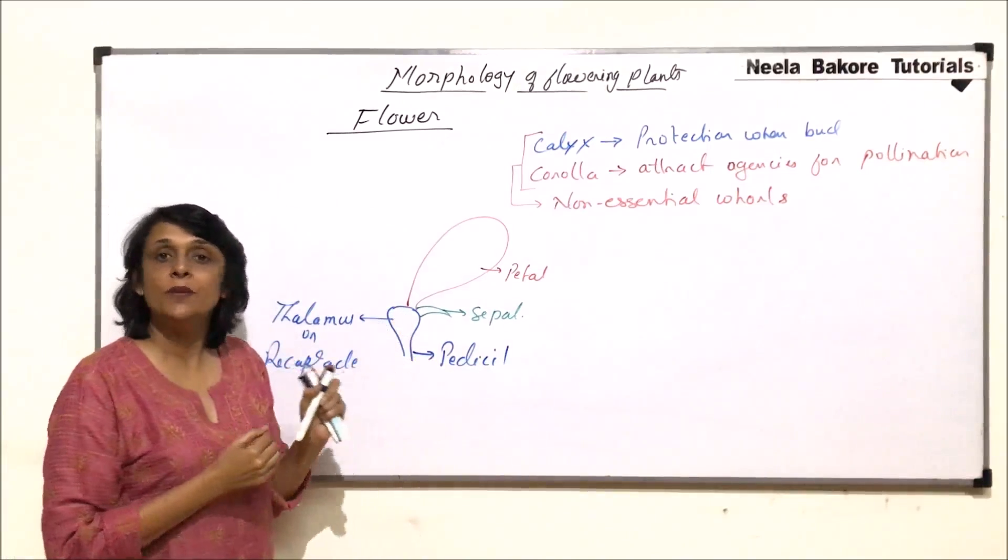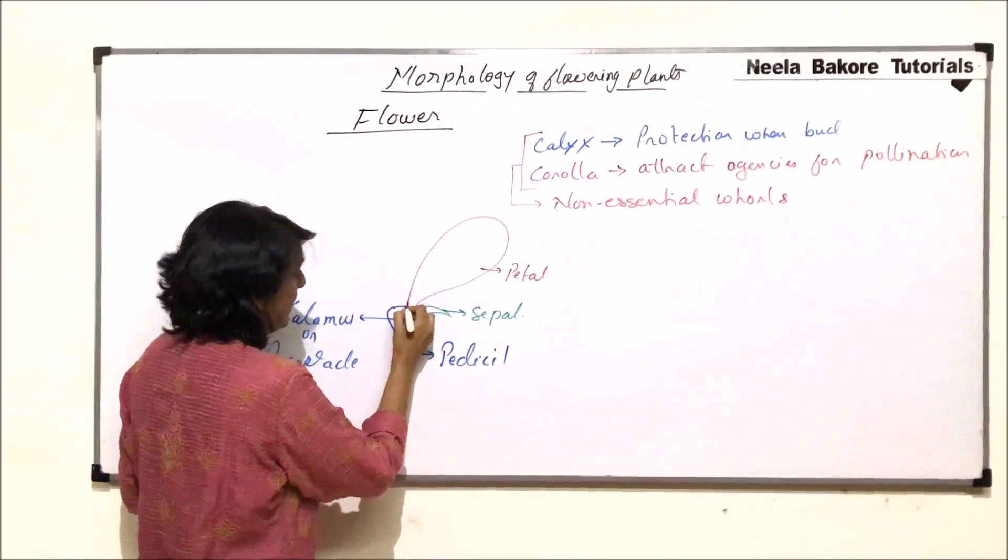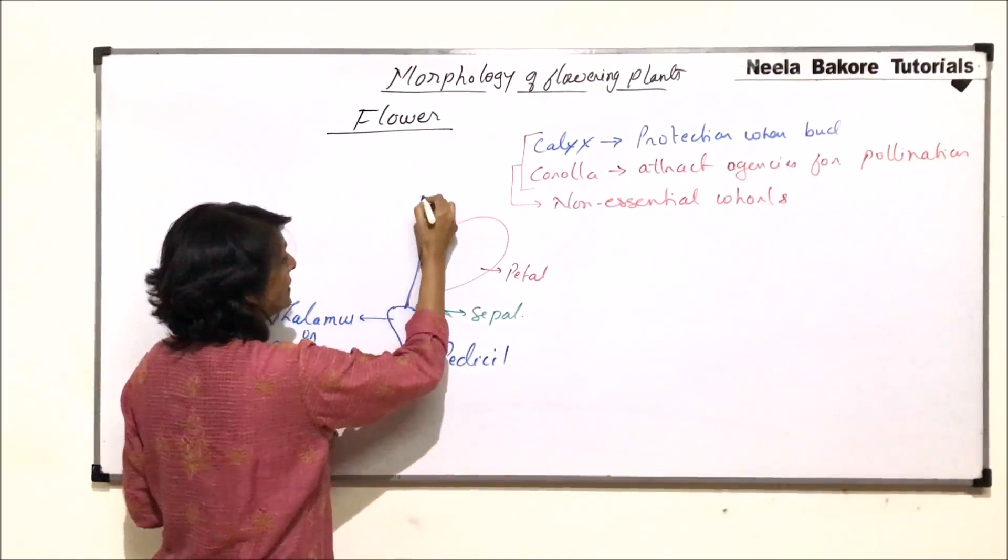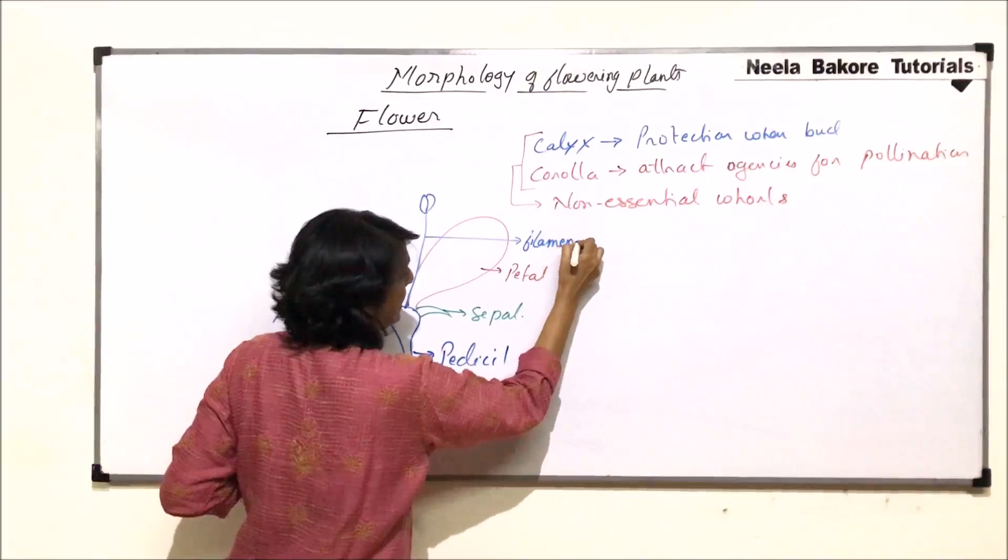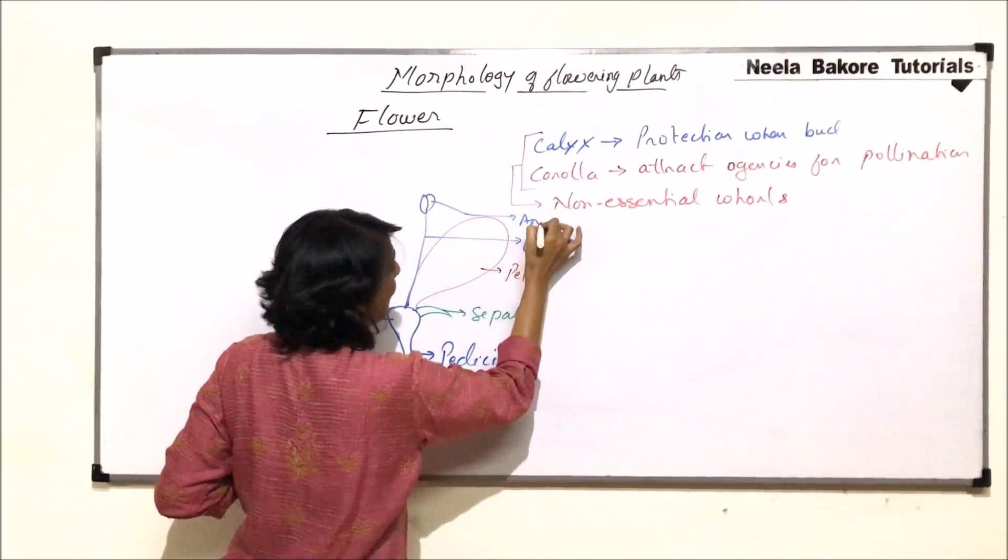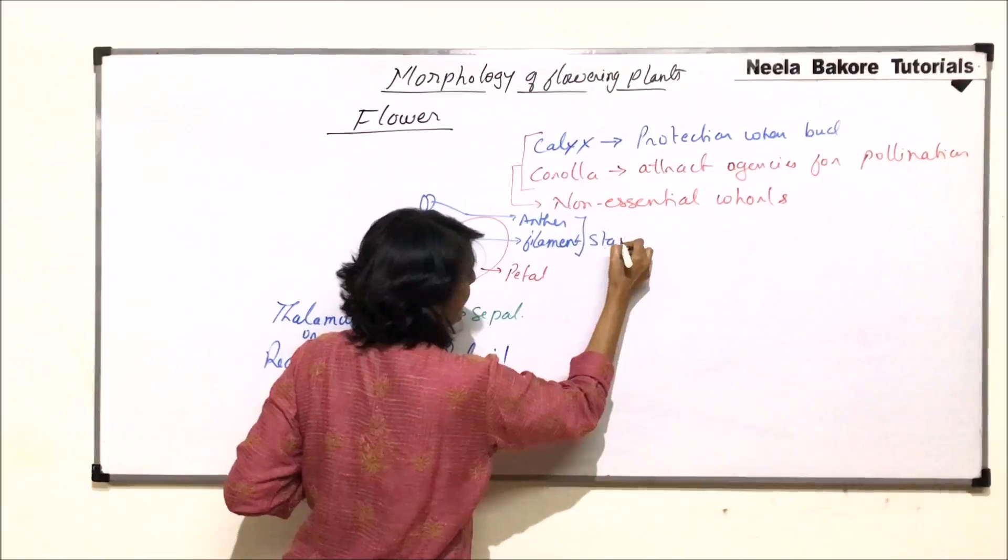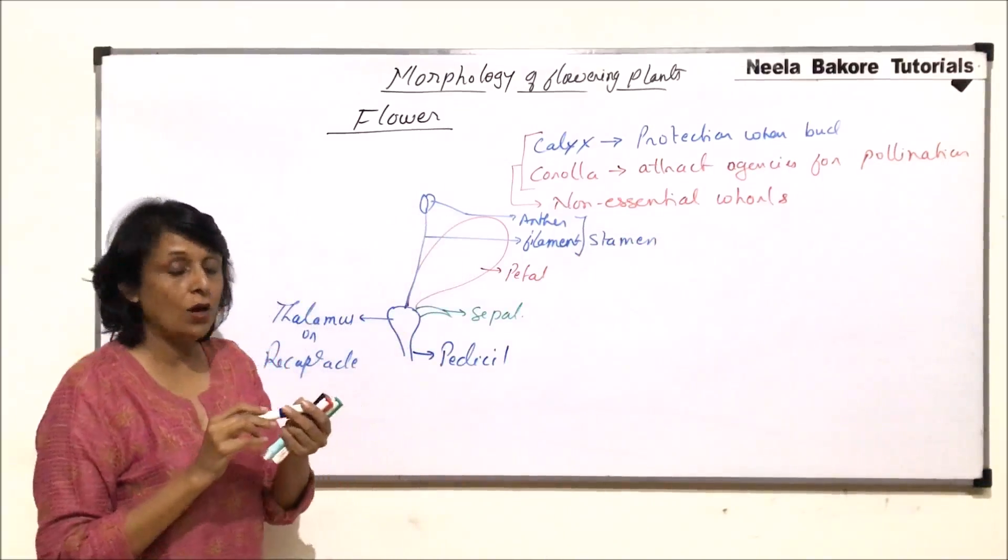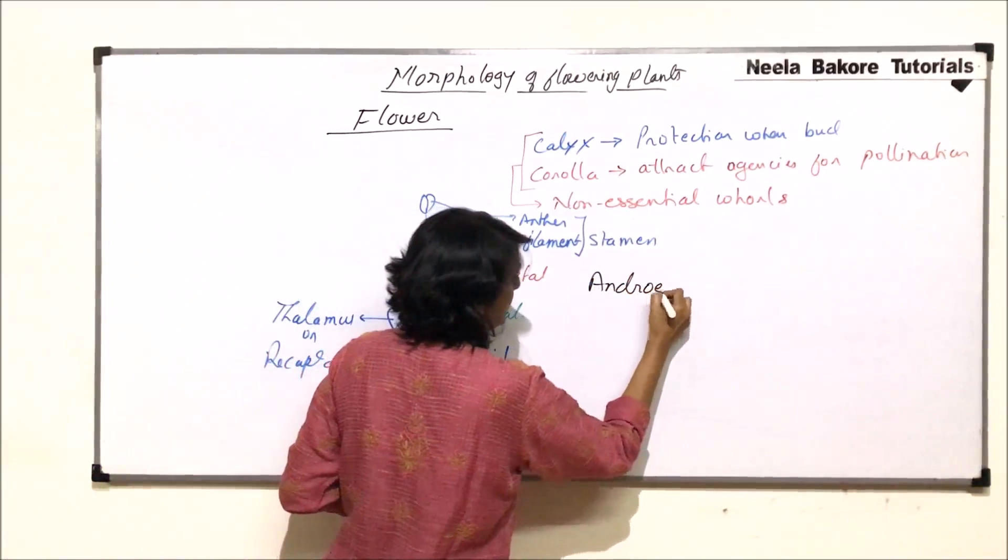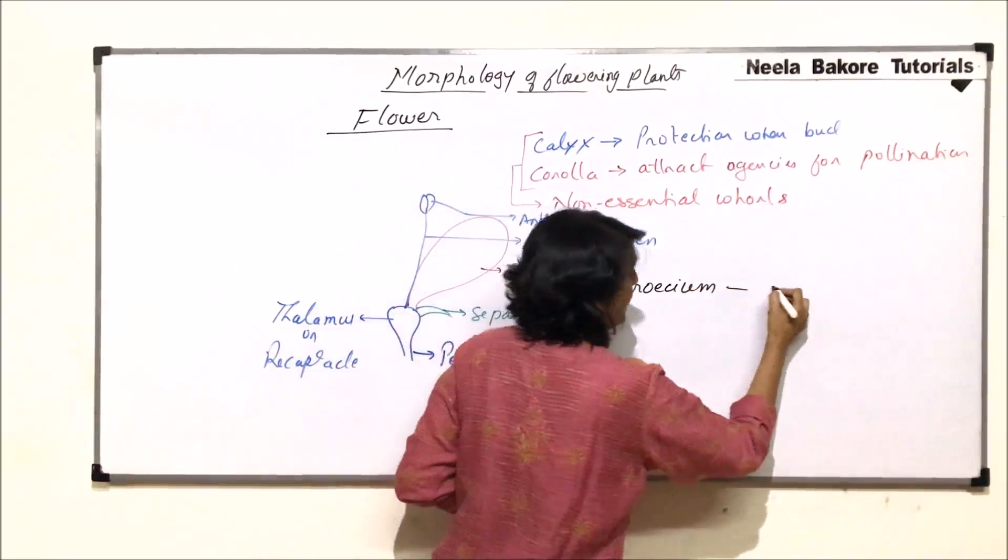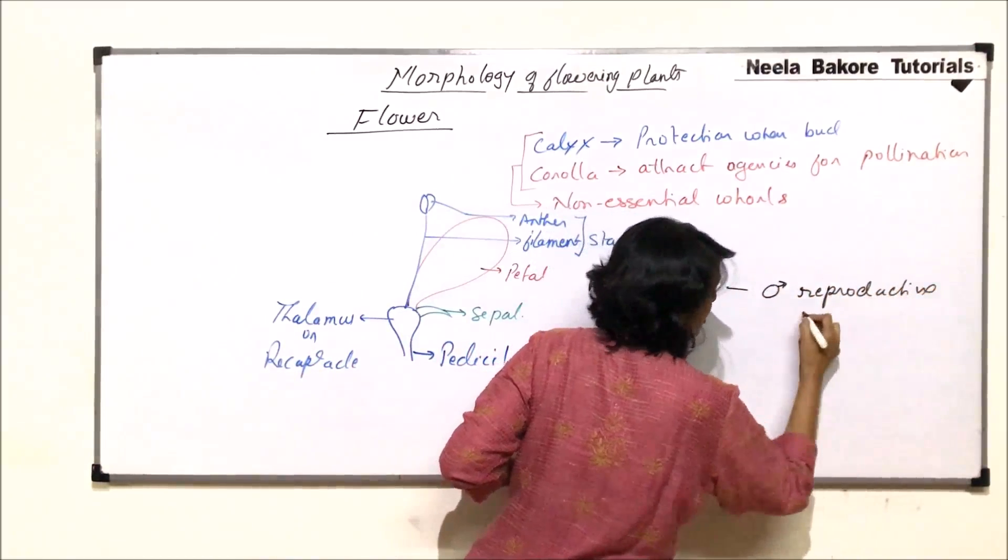Inner to the petals would come the third whorl that is now the essential. It is the male reproductive part. It is attached here. It has two parts, a thread-like structure which is called the filament and a swollen part which is known as the anther and these two together would be termed as the stamen. Individual member is called stamen and the whorl is known as androecium. Androecium is the male reproductive structure or whorl.